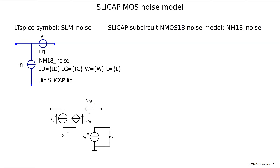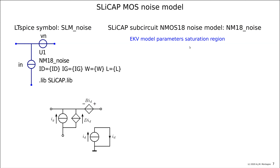We also have the gate current leakage source IG, but in many cases you just enter IG equals zero and it will be zero, so you won't find it in your vectors or matrices. We use the ECov model parameters for the saturation region, so it's not valid in the linear region, but it is valid for weak inversion, moderate inversion, strong inversion, and velocity saturation — all of that is modeled.